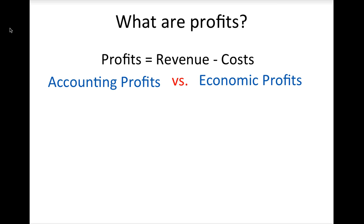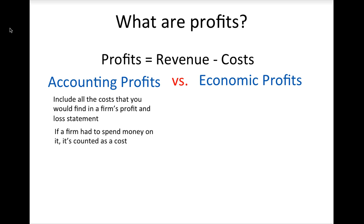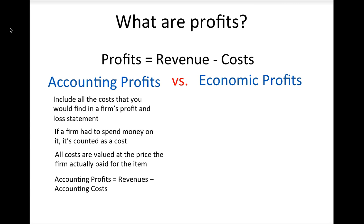You may have learned about these different types of profits in your introductory economics course. Accounting profits include all the costs that you would find in a firm's profit and loss statement. Generally speaking, if a firm had to make a cash outlay or write a check to cover some expense, it is deducted from accounting profits. All of these costs are valued at the price the firm actually paid for the item. A general formula for a firm's accounting profits is its revenues minus its accounting costs.